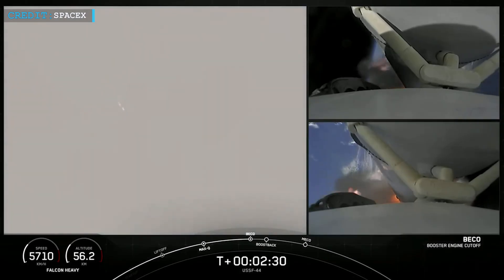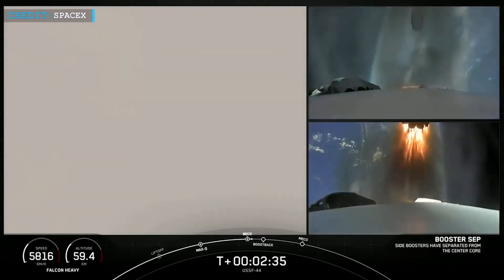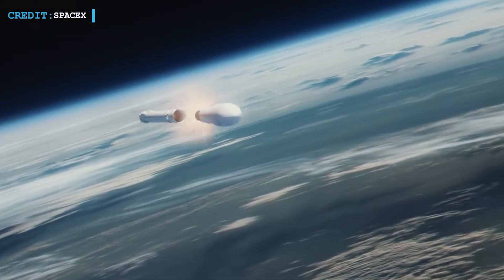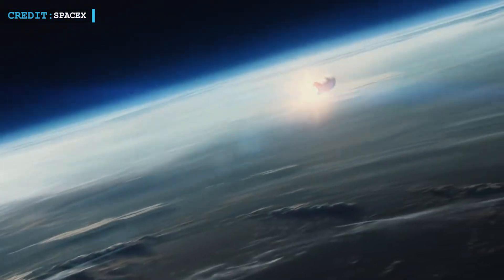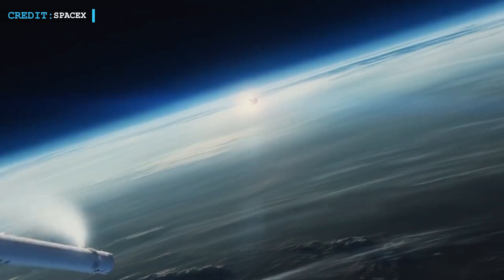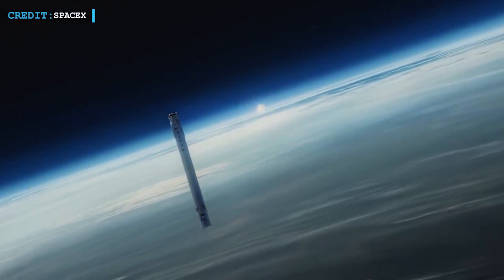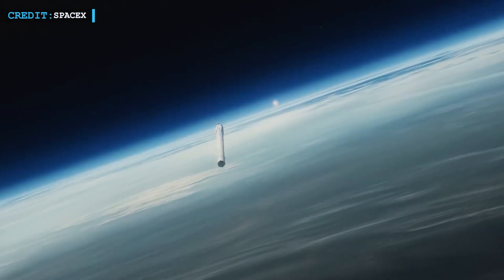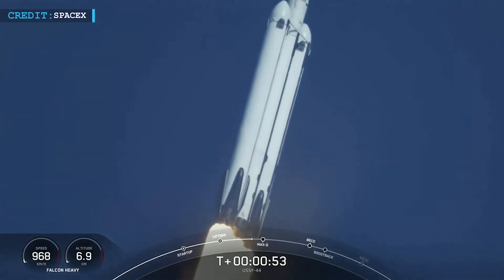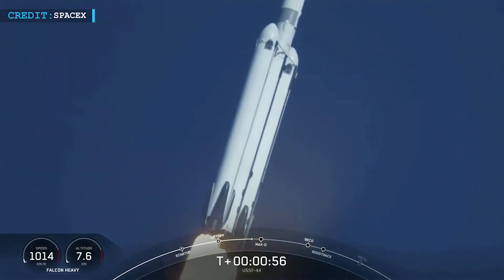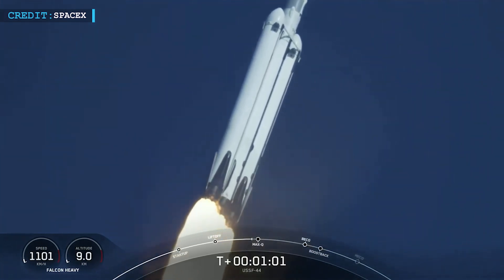Tice further clarified that upon side booster separation, the center core will keep firing for about 90 seconds before shutting down its engines, then perform a standard stage separation from the second stage. We will not be attempting to land our center core today, as the mission requires more performance in order to get our payload where it needs to go. The center core will burn the fuel that we would typically use for recovery, and for this reason only the two side boosters have grid fins and landing legs installed, while the core booster has none of them.